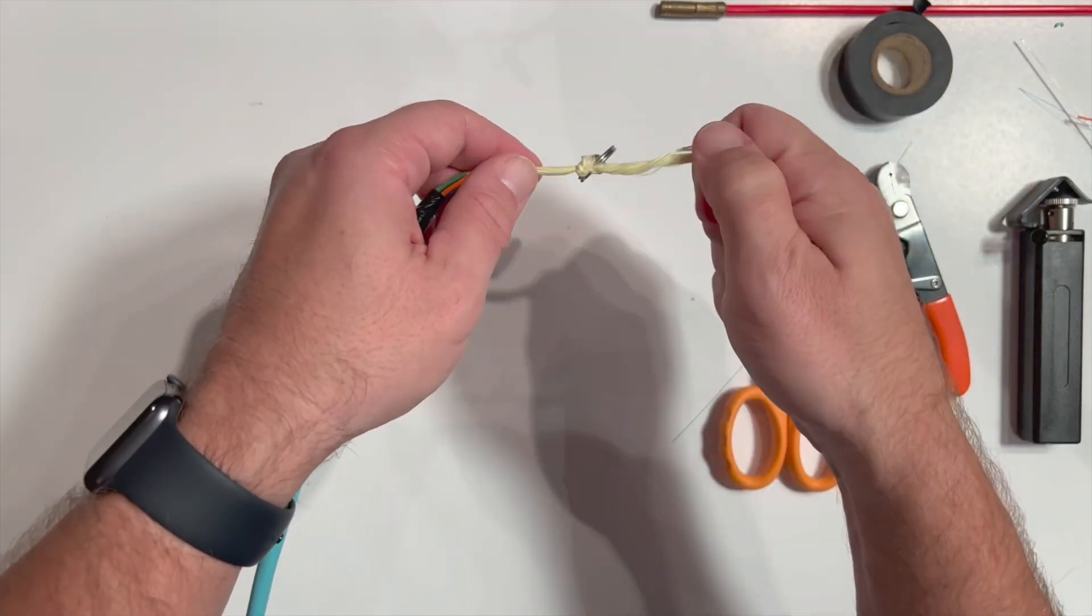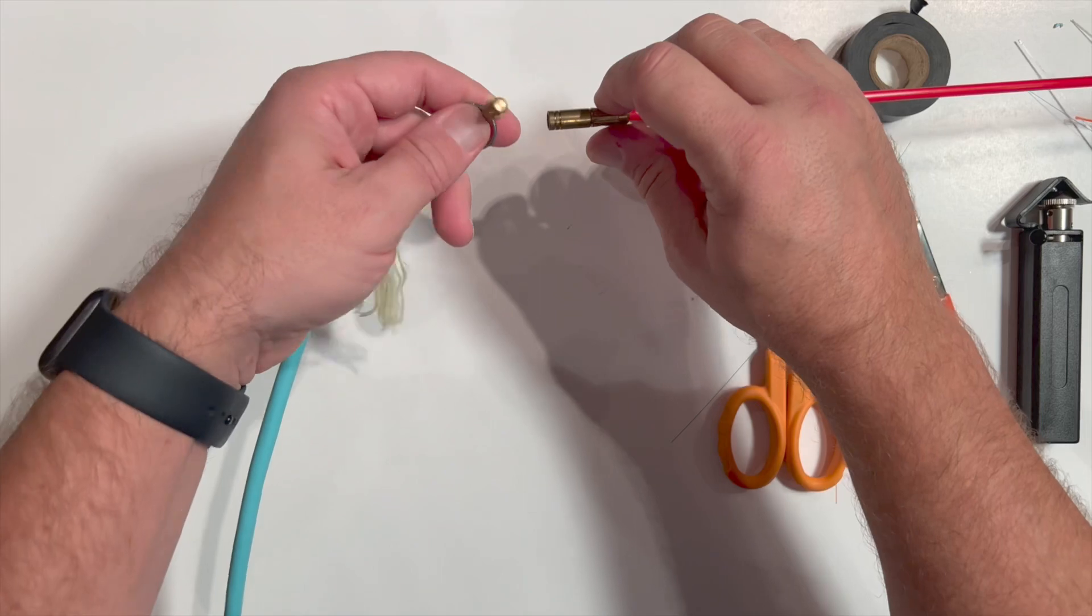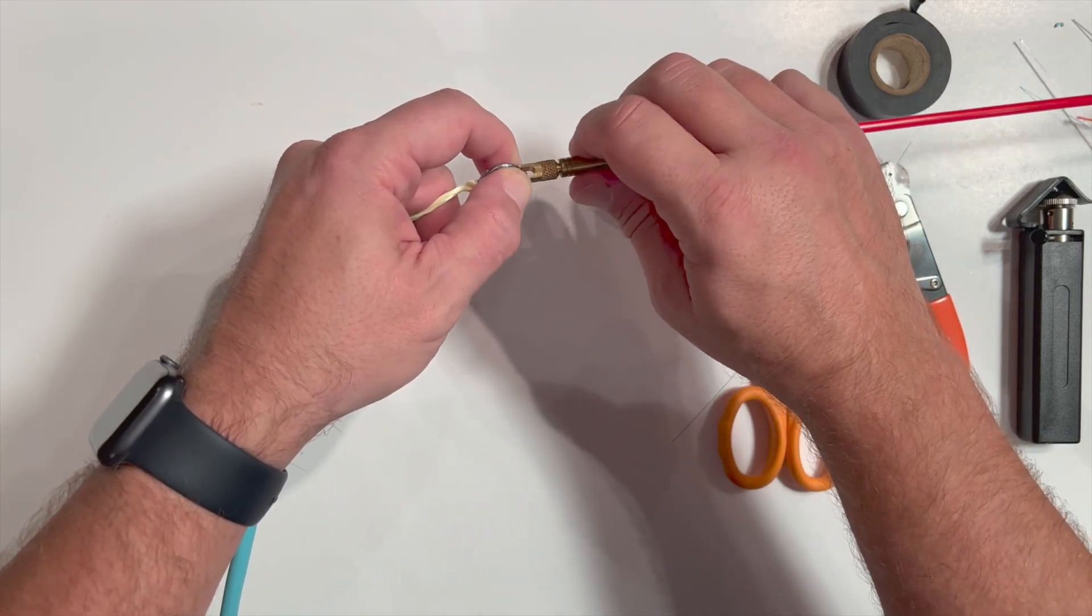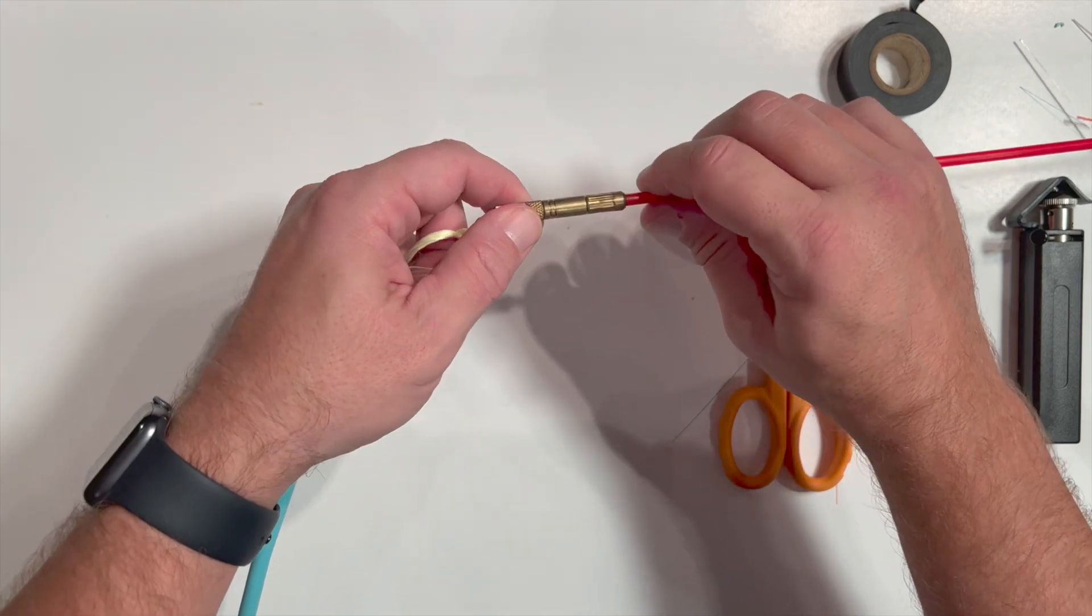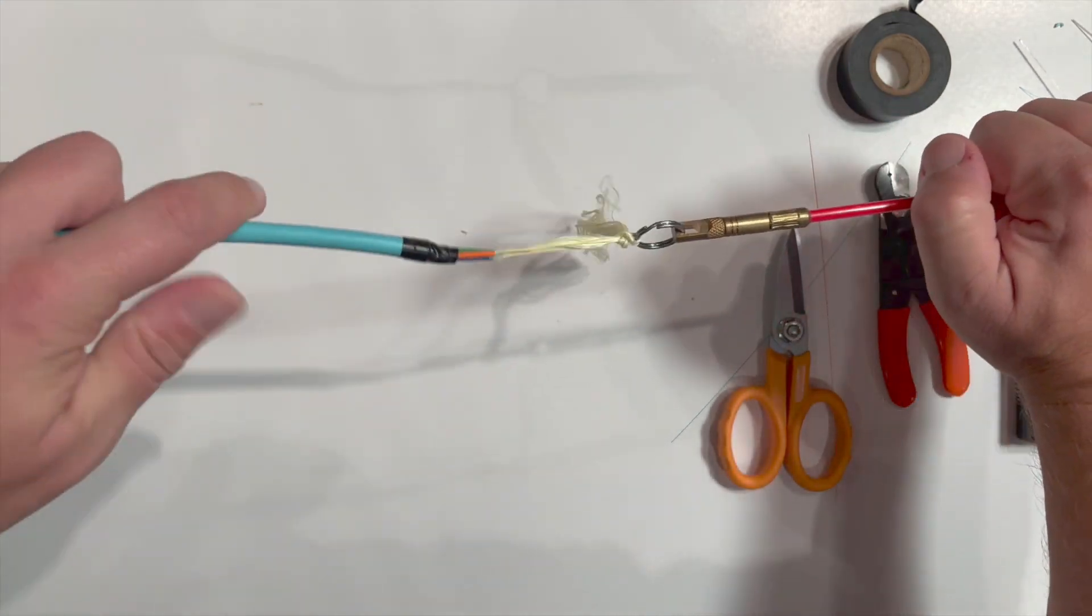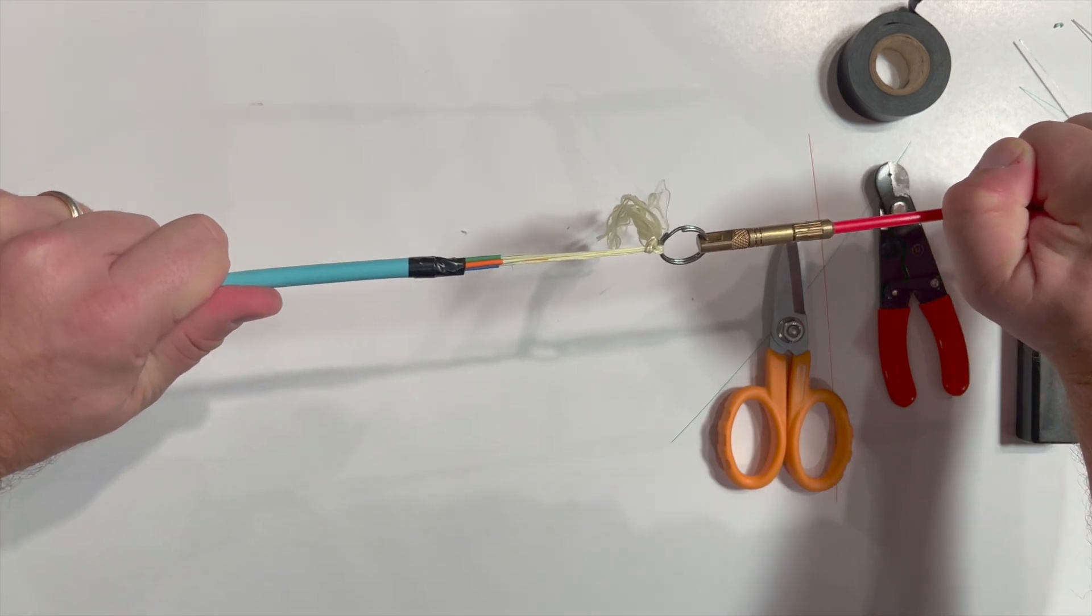Once the aramid yarns are securely tied to the pull ring or eyelet of the mesh grip, attach it to the pull rod or drawstring. If you're using a pull-rod system, it's essential that the attachment has a swivel adapter such that any twisting of the optical fiber is absorbed through the swivel motion.